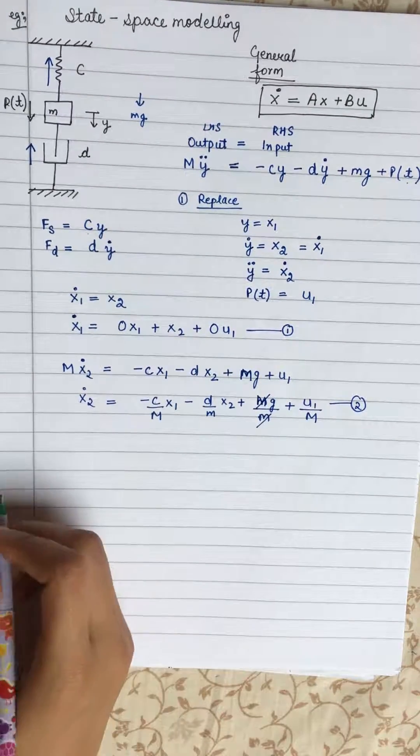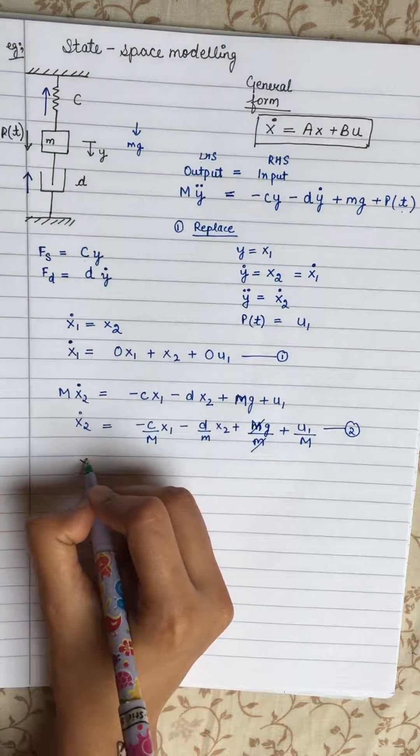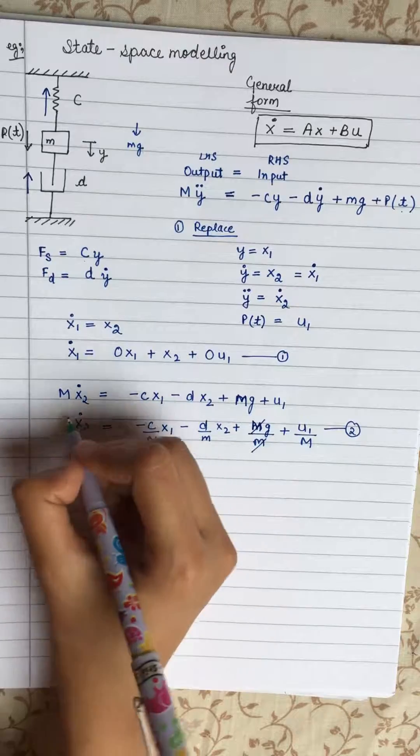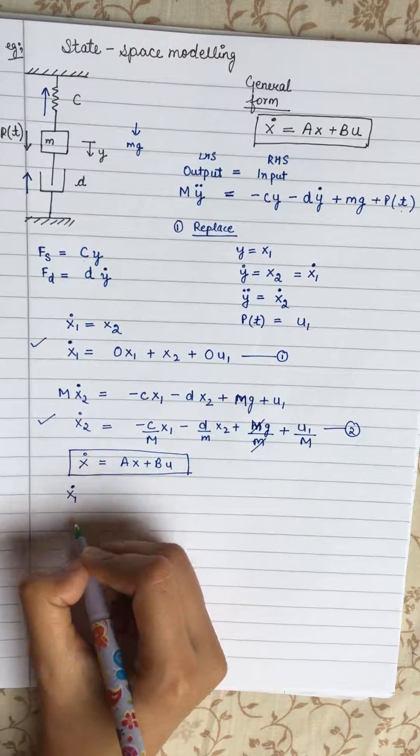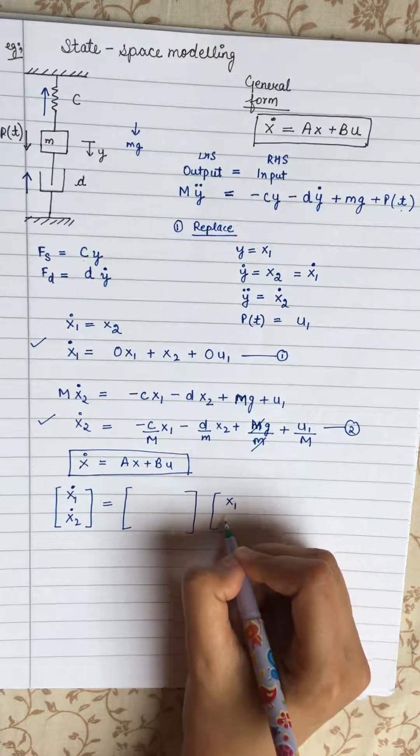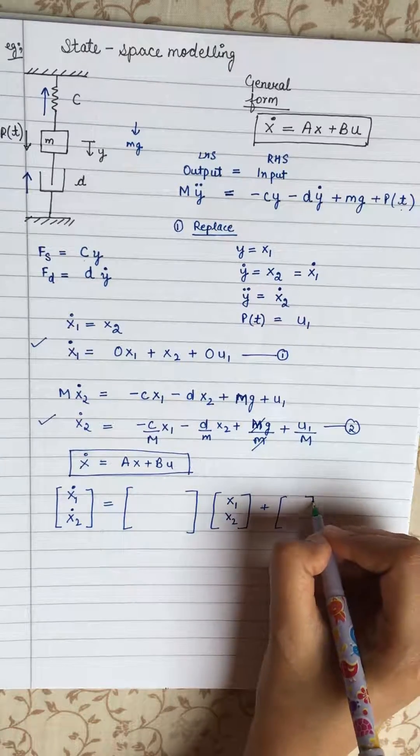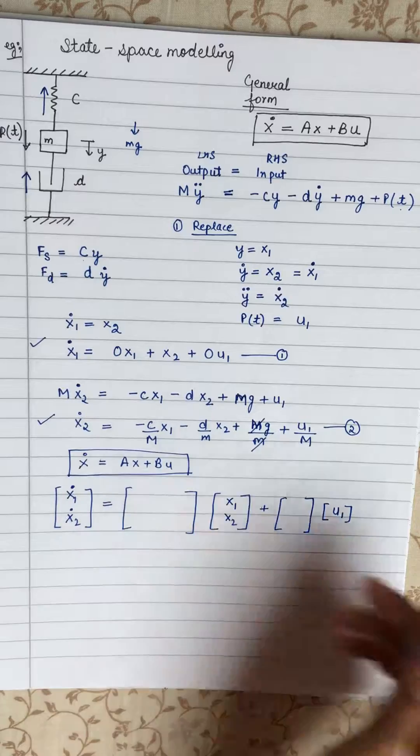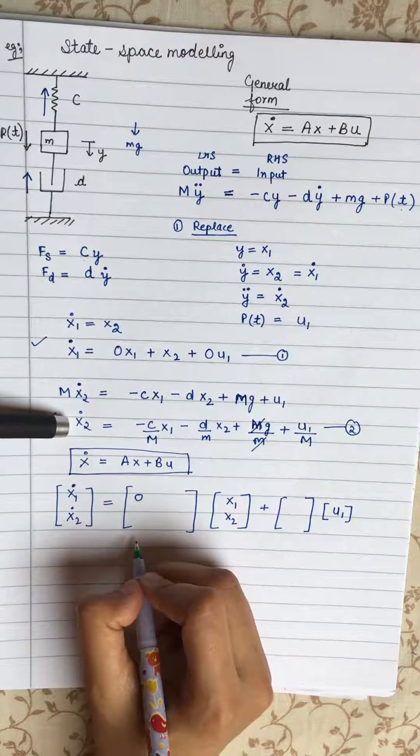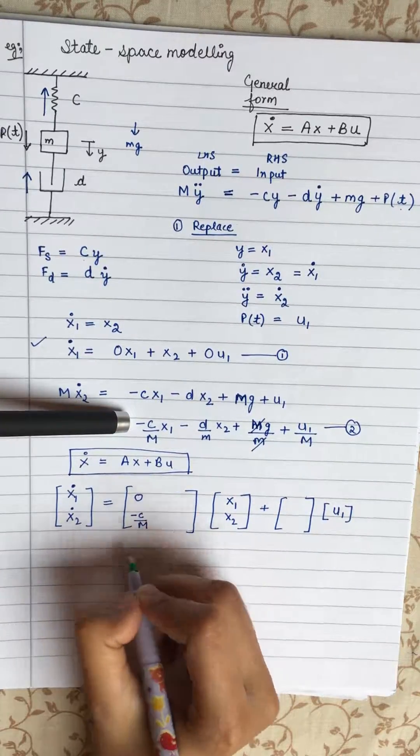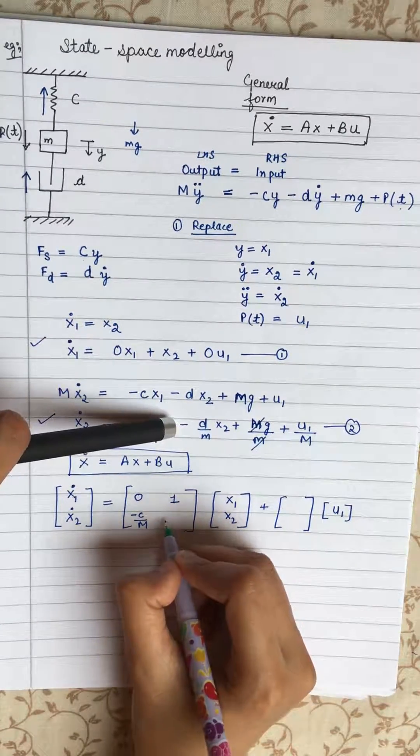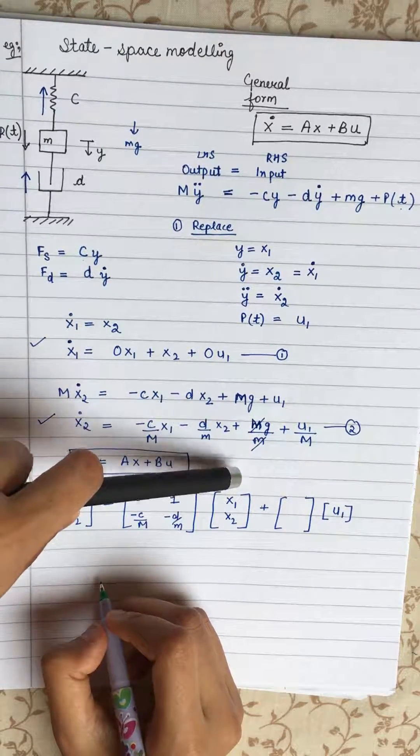For the state space modeling, we have to look at this equation back. Let's just write down X dot is equal to A X plus B U. Now our X dot is this equation and this equation. So it will be X1 dot over X2 dot equals A into X that is X1 and X2 plus B into U that is our U1. Now A, for the X1 dot equation, the X1 value is 0. In the X2 dot equation, X1 value is minus C over M. In the X1 dot equation, X2 value is 1. In the X2 dot equation, X2 value is minus D by M.